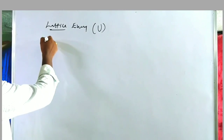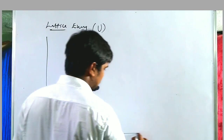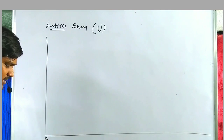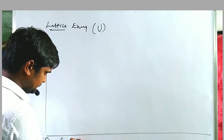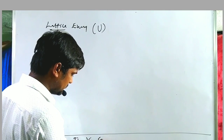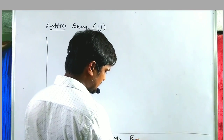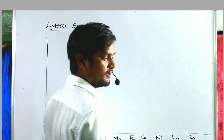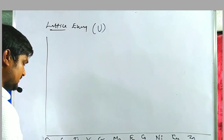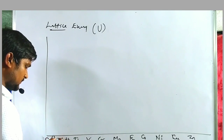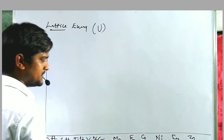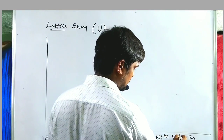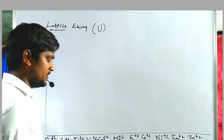Let us take the d-transition metal elements: calcium, scandium, titanium, vanadium, chromium, manganese, iron, cobalt, nickel, copper, zinc — 11 elements, all in the plus-2 state. These are Ca²⁺, Sc²⁺, Ti²⁺, V²⁺, Cr²⁺, Mn²⁺, Fe²⁺, Co²⁺, Ni²⁺, Cu²⁺, and Zn²⁺.